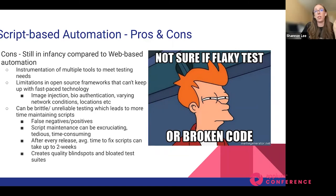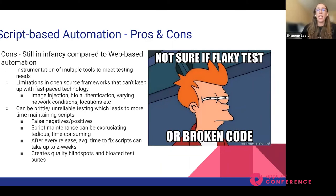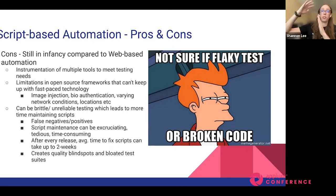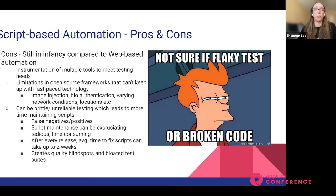A study showed that anytime there was a new release of an application, it took an average of two weeks to fix and remediate every script to continue automation, which is wild. We're seeing very hard-to-maintain, very flaky tests. This creates quality blind spots because you don't know if that's a false negative or false positive. As you try to remediate your scripts, you end up with bloated test suites and bloated scripts. It's very counterproductive — you're trying to achieve automation, but it feels like so much is stacked against you.